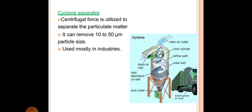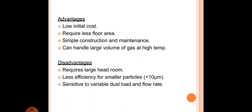Cyclone separator: centrifugal force is utilized to separate the particulate matter. It can remove 10 to 50 micron particle size, used mostly in industries. Advantages are low initial cost, require less floor area, simple construction and maintenance, can handle large volume of gas at high temperature. Disadvantages are requires large headroom, less efficiency for smaller particles less than 10 micron, sensitive to variable dust load and flow rate.